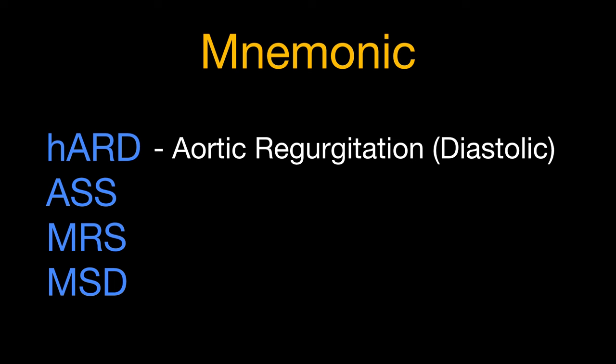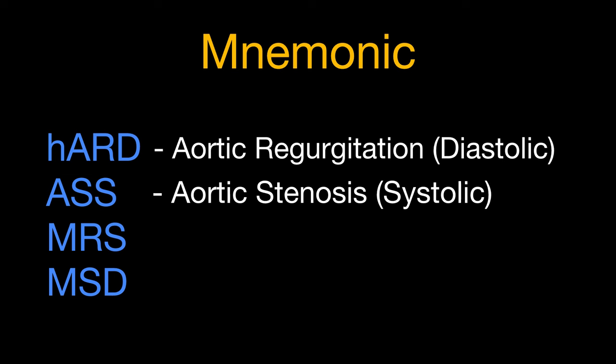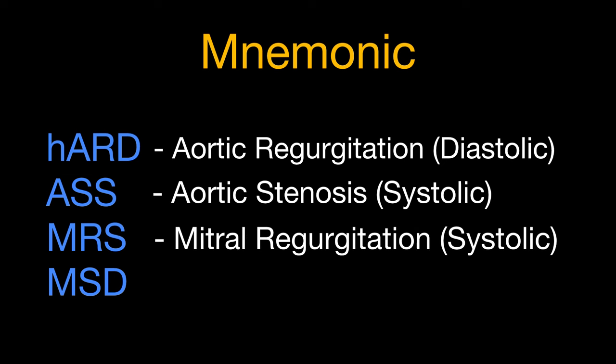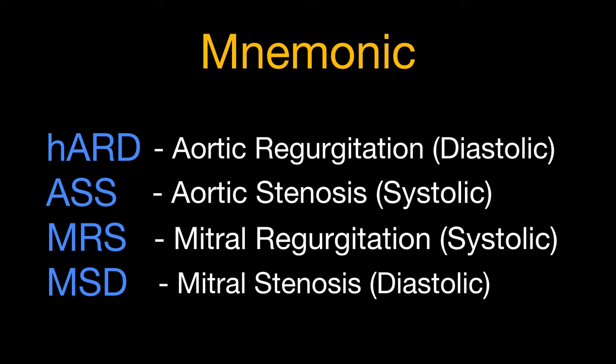A final mnemonic: HARD (H silent). AR — aortic regurgitation — is a diastolic murmur; AS — aortic stenosis — is a systolic murmur. MRS: MR — mitral regurgitation — is systolic; MS — mitral stenosis — is diastolic. That covers the basic concepts of murmurs and why they are systolic, diastolic, or continuous. I hope this was useful — I'll be asking two questions and need your answers in the comments below.